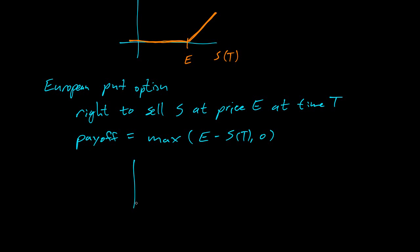Here's the graph. If the stock price is higher than the exercise price, I have the right to sell it at this low price, which is worthless. If the price has gone down, then I start making money. That's a European put option.